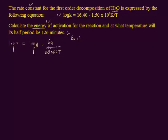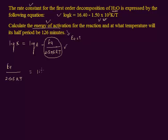We compare the Arrhenius equation with the given equation. Since we have to calculate the energy of activation, we compare the corresponding part of the given equation and set up: Ea divided by 2.303 R T is equal to 1.50 × 10³ K upon T.